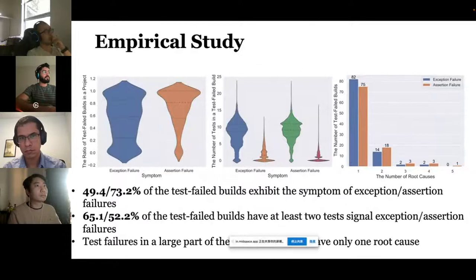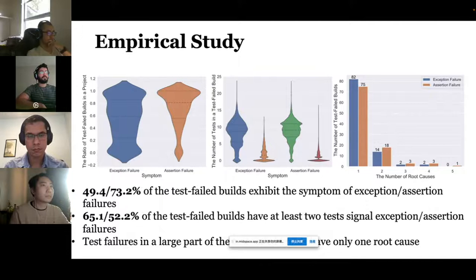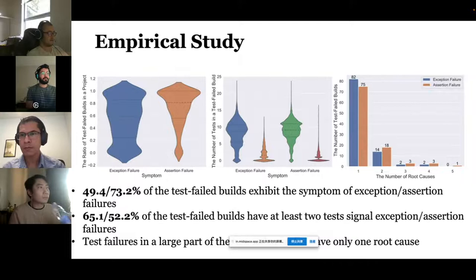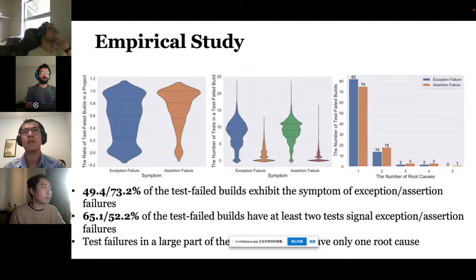We present a large-scale empirical study to understand test failures in CI builds. We found that both exception and assertion failures are common causes of test failure builds, therefore test failure triage tools in CI should support both. Multiple test failures are common in a single build, representing the potential for reducing test failure diagnosis cost. In a large part of test failure builds, the failures have only one root cause, so triage approaches should be aware of this characteristic.